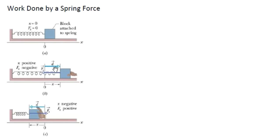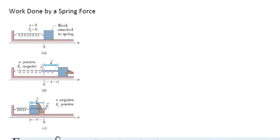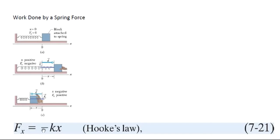When we pull the block to the right, the displacement is to the right but the force from the spring is to the left. And if we compress the spring, the displacement is to the left but the force from the spring is to the right. In other words, the force from the spring is always opposite to the displacement.